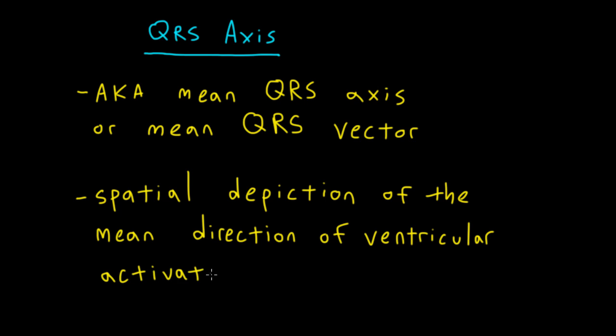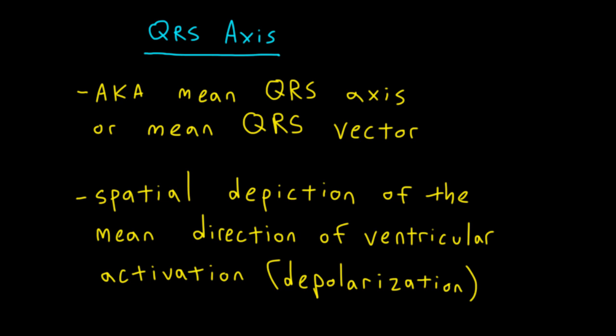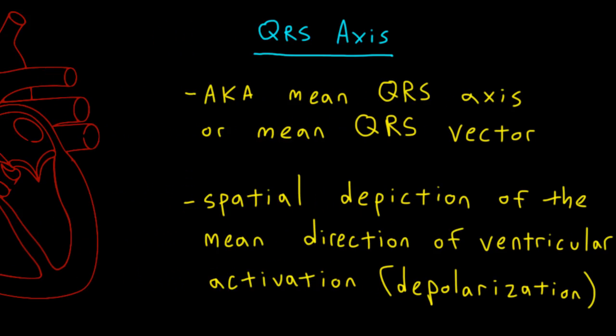In other words, it tells us the mean direction of ventricular depolarization within the frontal plane. It's a very helpful concept because when you read your patient's EKG, being able to draw the QRS axis can give you a lot of information about their heart. We often think of the axis in conjunction with the QRS transition to get a better idea of what's going on. To better understand this, let's take a closer look at what exactly goes on within the ventricular myocardium during the QRS complex.